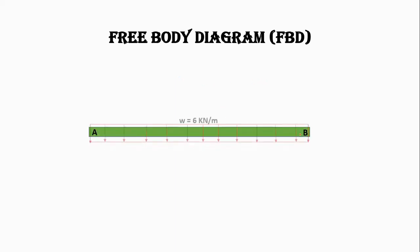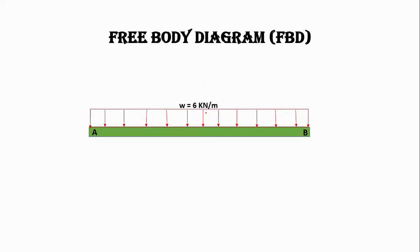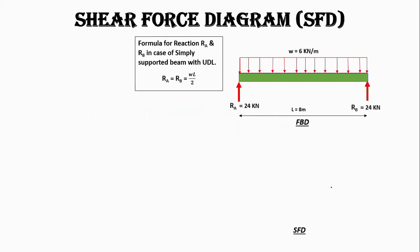Let's draw the free body diagram. We have a beam AB with a uniformly distributed load of 6 kilonewtons per meter acting on 8 meters, with support reactions of 24 kilonewtons on each side. Now we will write the shear force equation and draw the shear force diagram for beam AB.